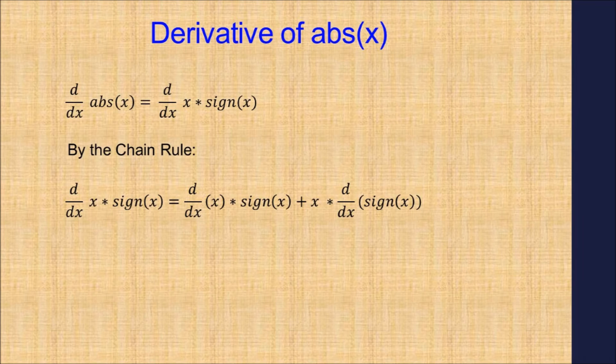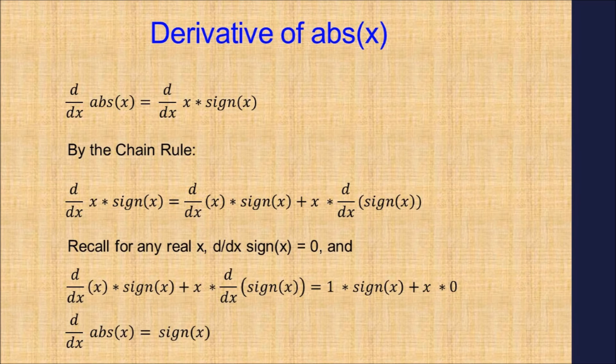Derivative of the absolute value function: Start by breaking the absolute function into its product, x times the signum function of x. Use the chain rule. Remember, the derivative of the signum function is 0.